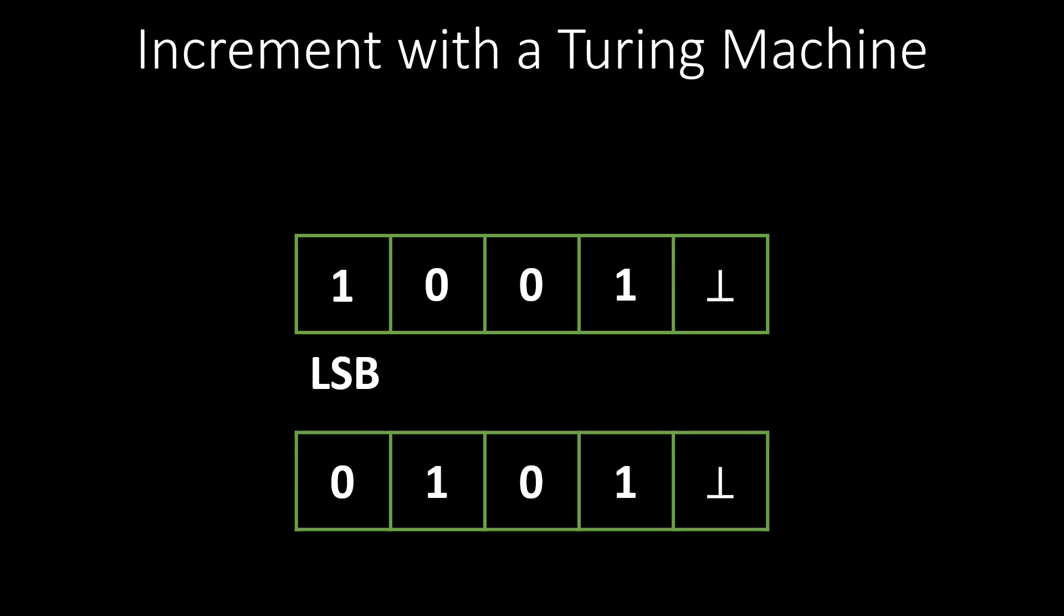Below you can see the binary representation of the number 10 on the tape. The idea is as follows: we start at the least significant bit and change all the ones to zeros until we encounter a zero, which we then change to a 1. For the number 9, we change the first one to a zero and move right. We then read zero and change it to 1. Finished.